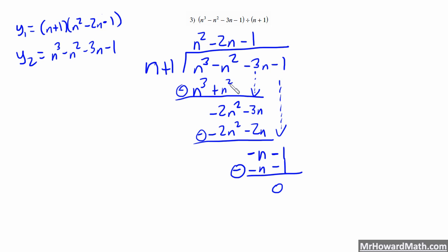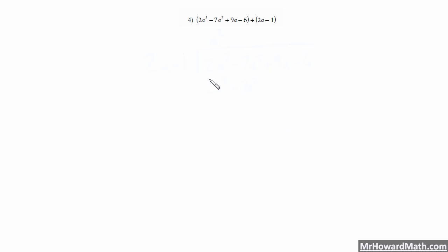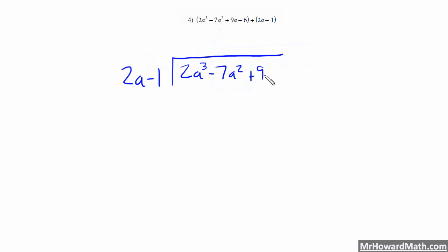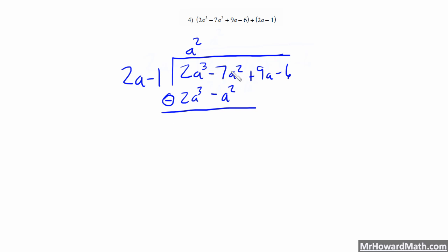Let's move on to the fourth and final example. In this example, we're going to be left with a remainder, so I'm going to show you how to handle that. We have 2a minus 1 dividing into 2a cubed minus 7a squared plus 9a minus 6. What times 2a gives us 2a cubed? Well, that would be a squared. a squared times 2a is 2a cubed, and a squared times negative 1 is negative a squared. We're subtracting, so these cancel, and negative 7a squared minus negative a squared becomes negative 7a squared plus a squared, giving us negative 6a squared.